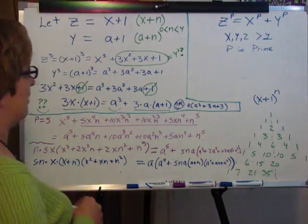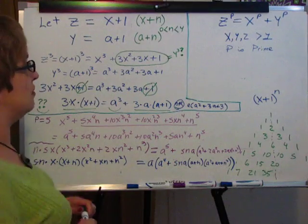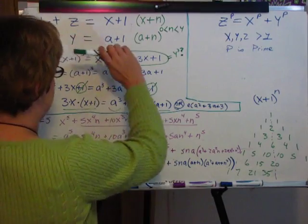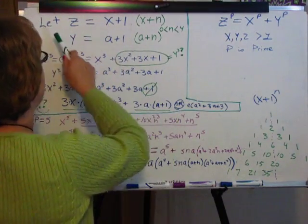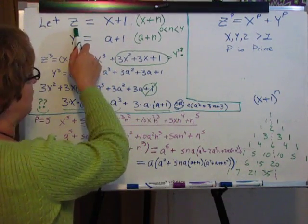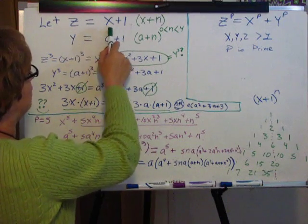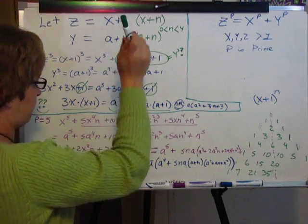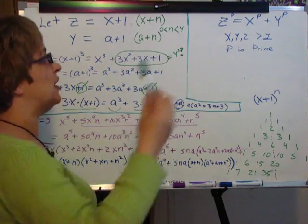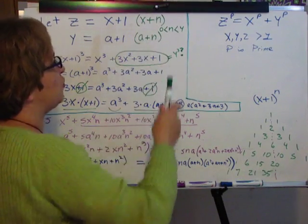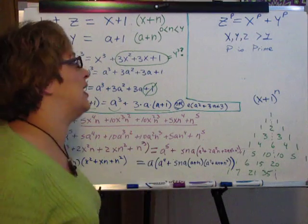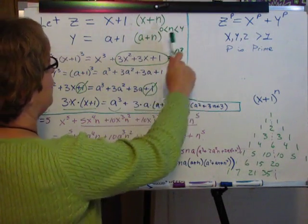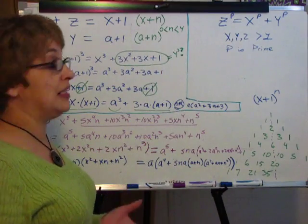We're going to start off by trying to construct some usable version of that equation. We'll start at the top and say we're going to pick a z where z equals x plus 1. And the full explanation requires you to use x plus n to cover all possible cases. If you do that, in order to fit in our equation, our n will then have constraints.